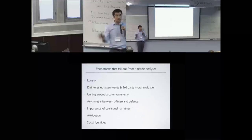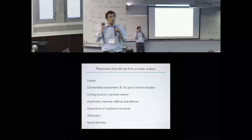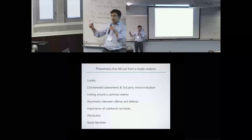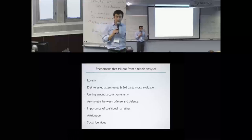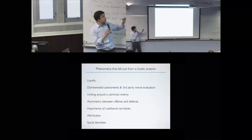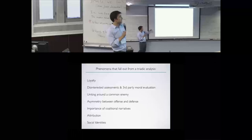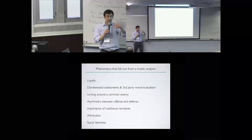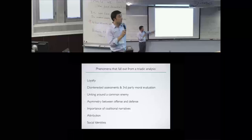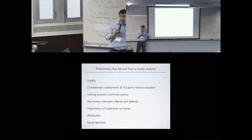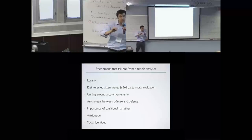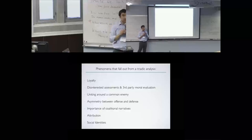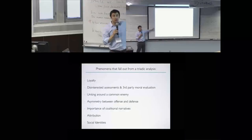Really quickly, if you just start thinking about each agent's perspective within this framework, things like loyalty, disinterested assessments, uniting around a common enemy, asymmetry between offense and defense, the importance of coalitional narratives and coalitional history, attributing why an attack happened, and even things like social identities—there's even something about scaling up. The question about how you get proximate psychology to scale up to larger sets of social agents, these things quickly fall out from doing this analysis.